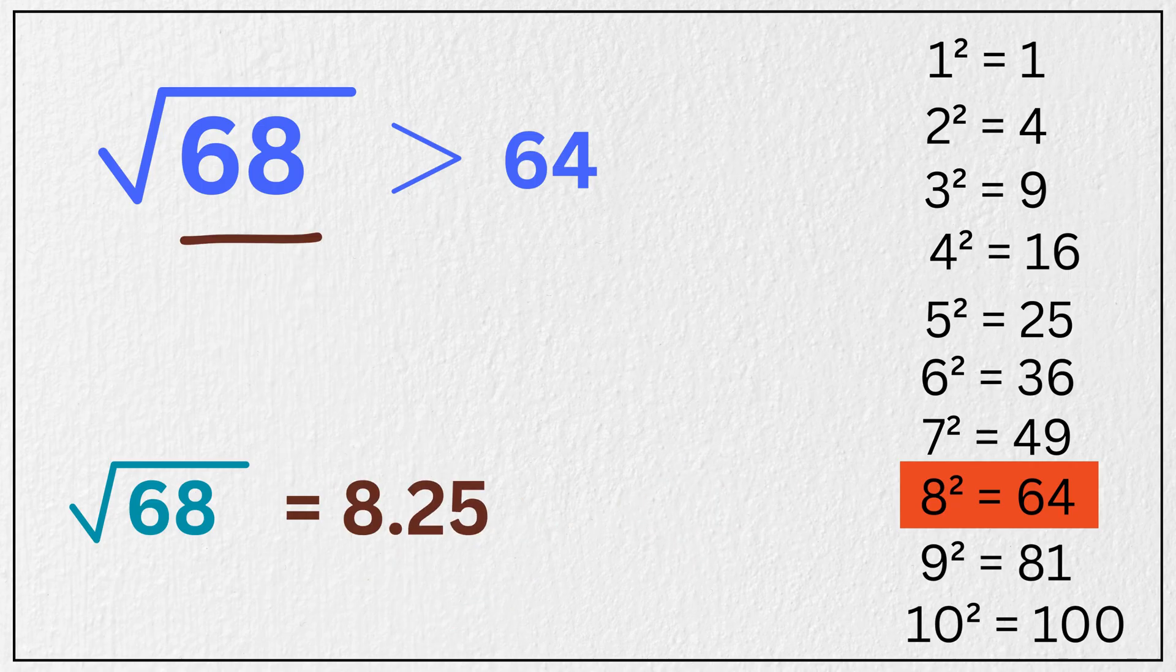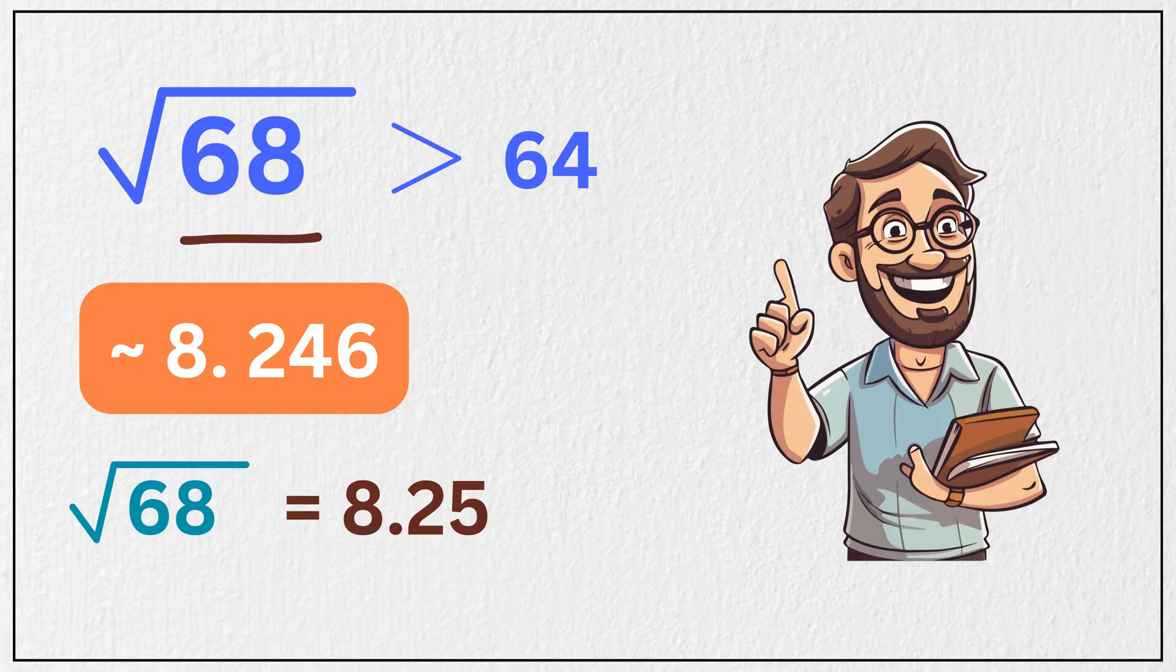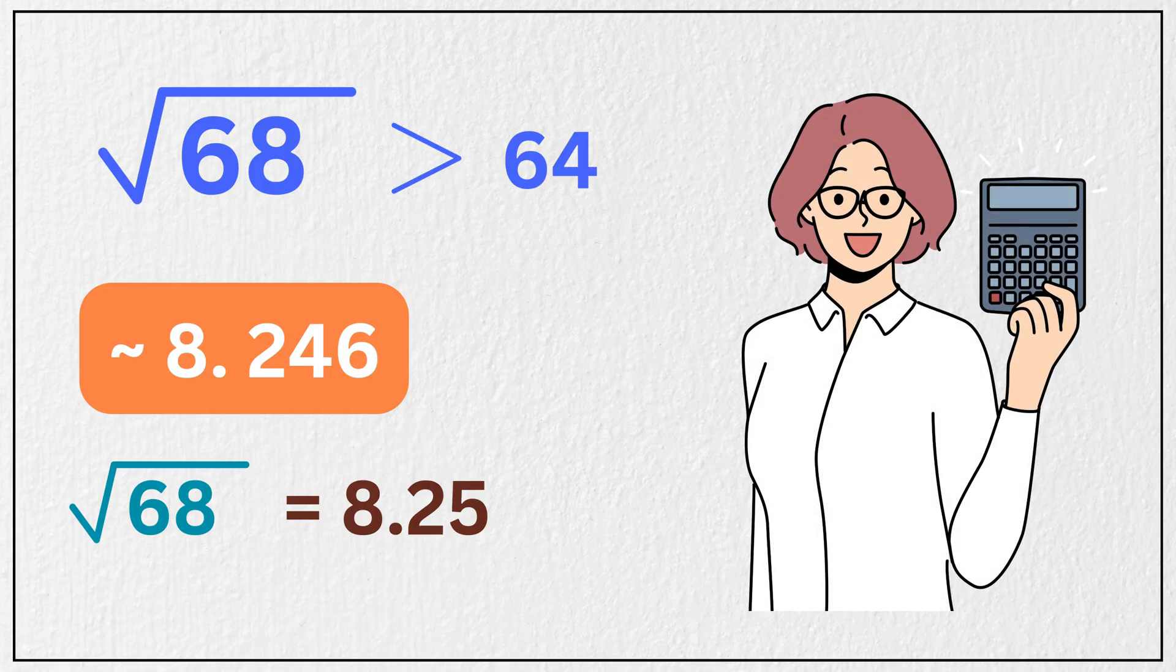The actual square root of 68 is about 8.246. So our estimate is super close and much faster than a calculator.